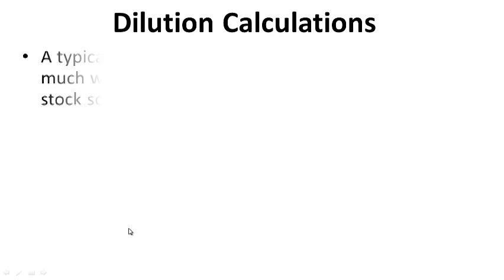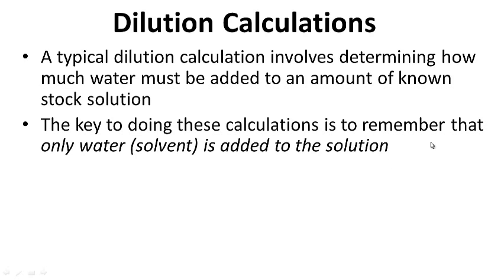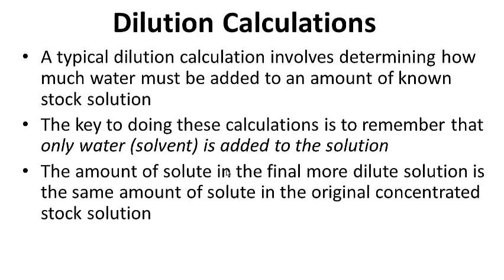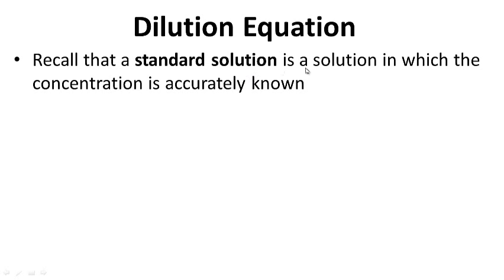A typical dilution calculation involves determining how much water must be added to an amount of known stock solution or standard solution. The key is to remember that only water — the solvent — is added. We're not adding solute. The amount of solute in the final, more dilute solution is the same as in the original concentrated stock solution. In other words, moles of solute after dilution equal moles of solute before dilution.